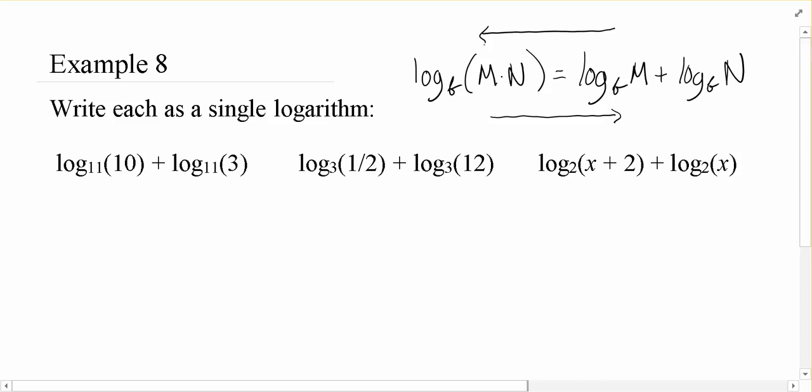And so these directions here indicate that we want to write this as a single logarithm, so we're doing the right to left direction. We're saying I have two logs of the same base that I'm adding together, so I could write that as a single logarithm by multiplying their arguments together. Now, 10 times 3 is 30, and that's my single logarithm that I was looking for.